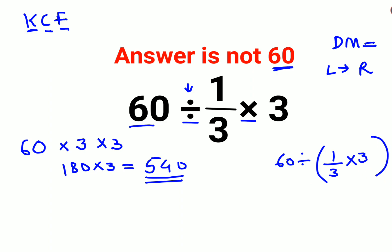we know in BODMAS and PEMDAS, we need to solve the parenthesis or brackets first. Here, this will get cancelled, so we get 60 divided by 1, which equals 60.